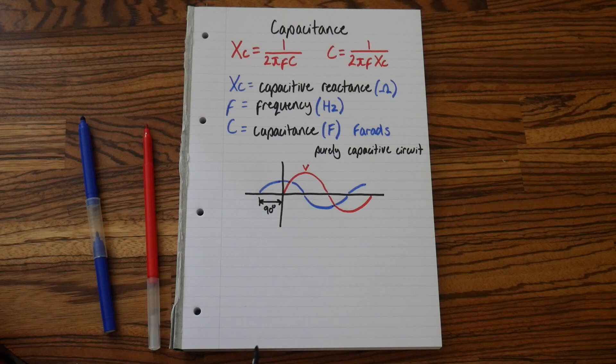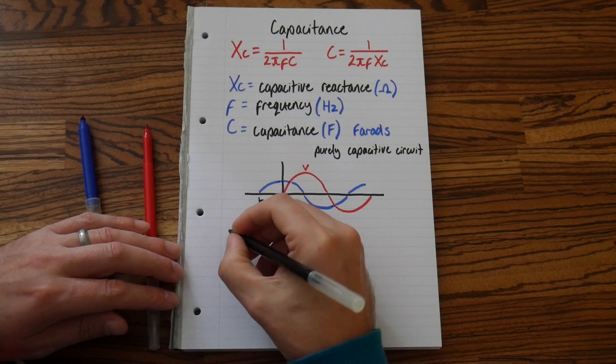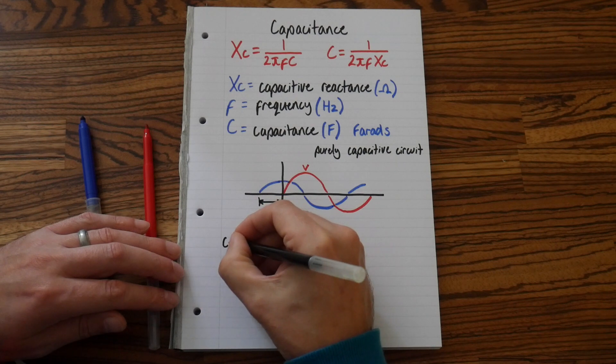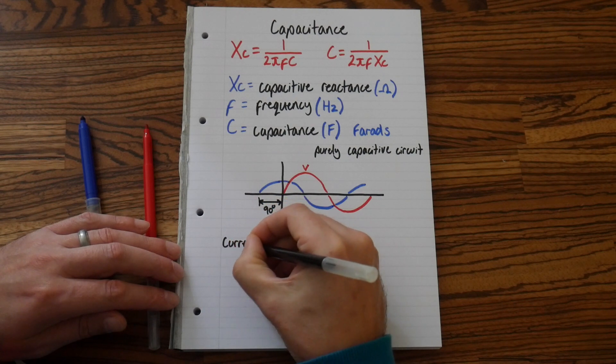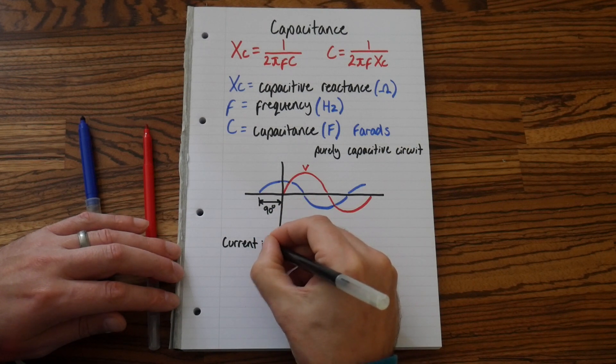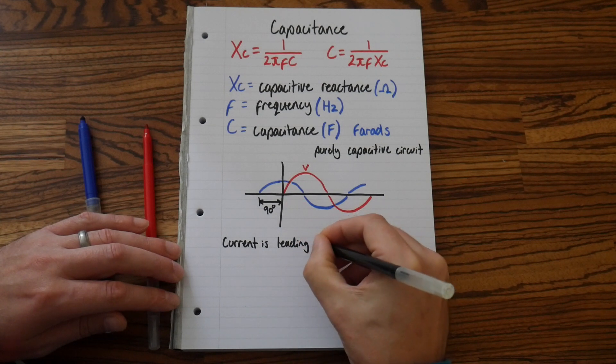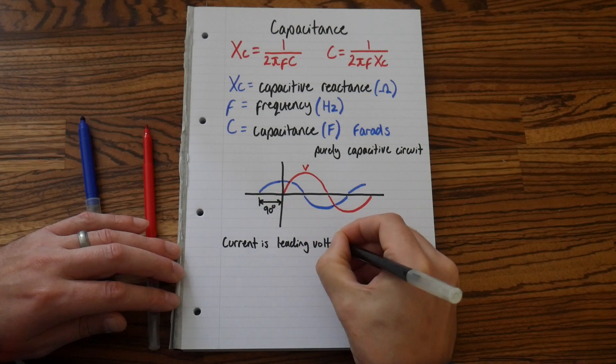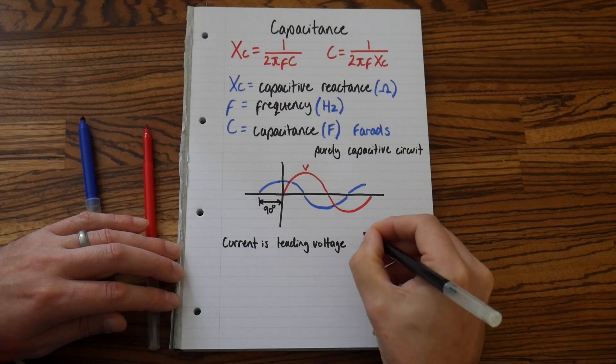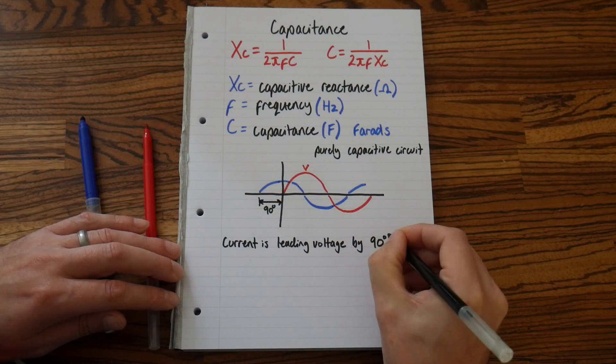And so we say from here to there is 90 degrees. And in a capacitive circuit we always talk about current first. So in a capacitive circuit we say current is leading voltage by 90 degrees.